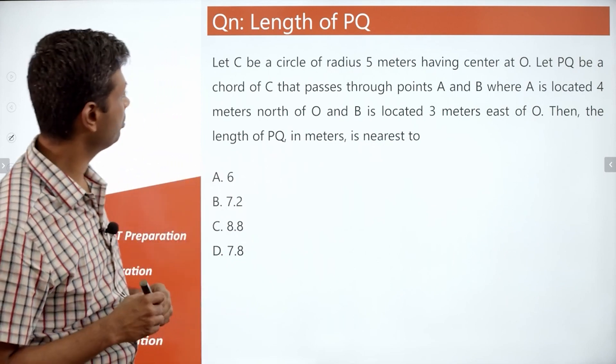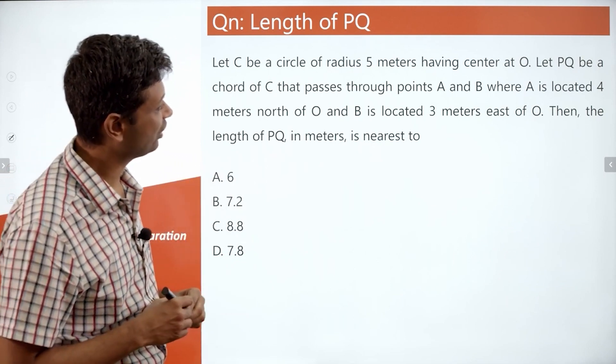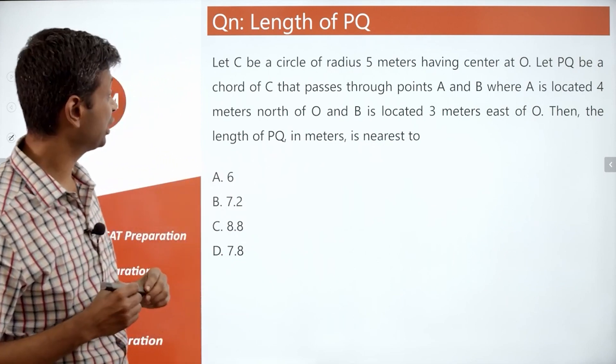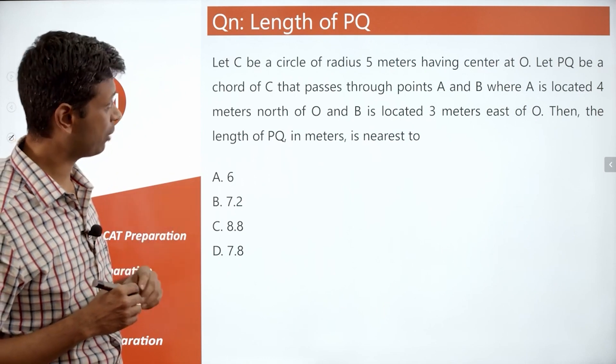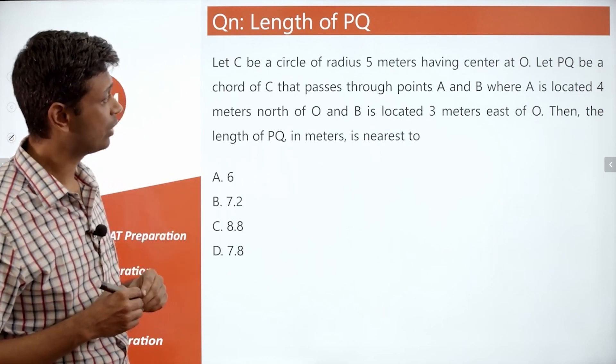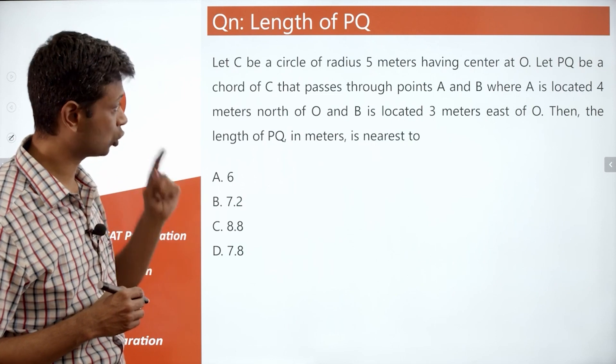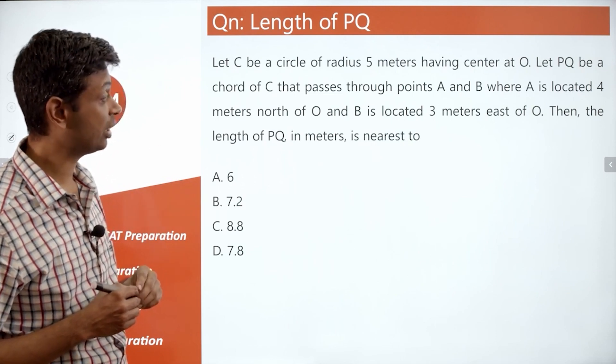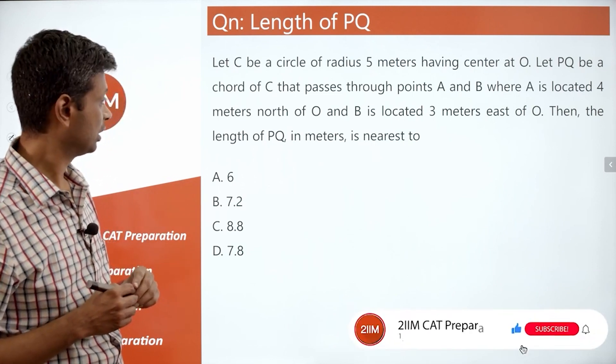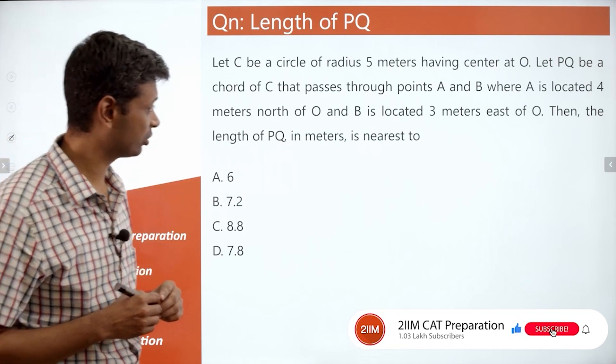Again, very interesting question. Let C be a circle of radius 5 meters having center at O. Let PQ be a chord of C that passes through the points A and B, where A is located 4 meters north of O and B is located 3 meters east of O. Then the length of PQ in meters is nearest to.